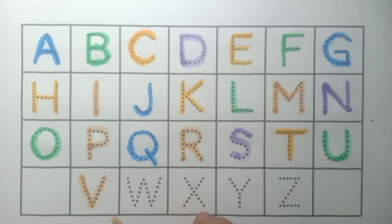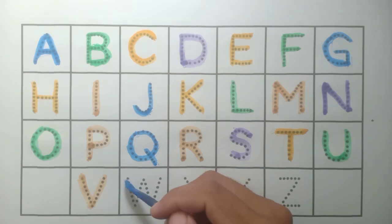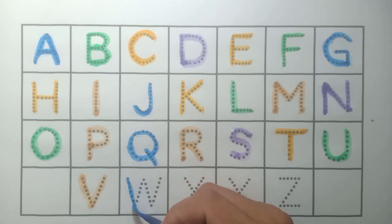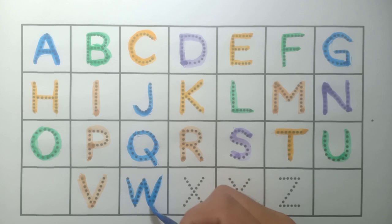And V, V for violin, brown color. And W, W for wolf, blue color.